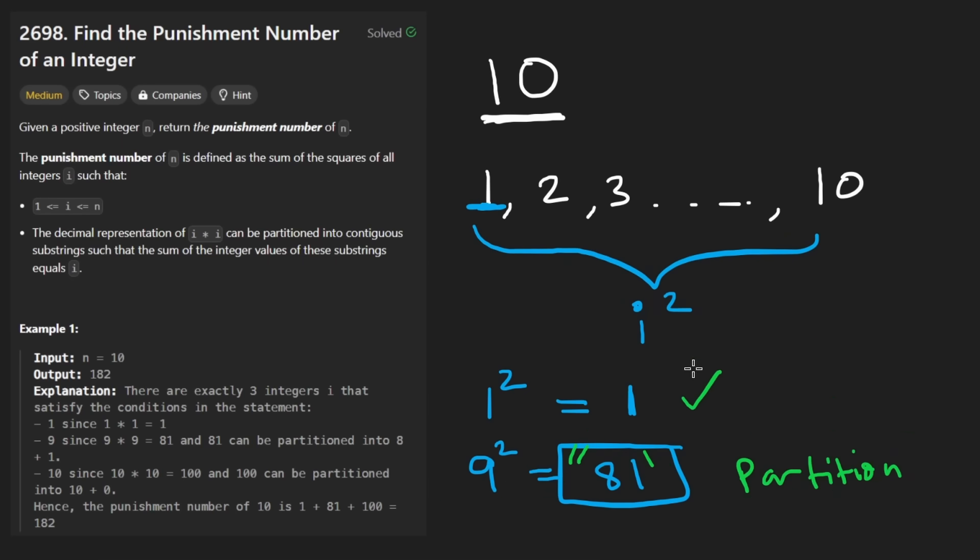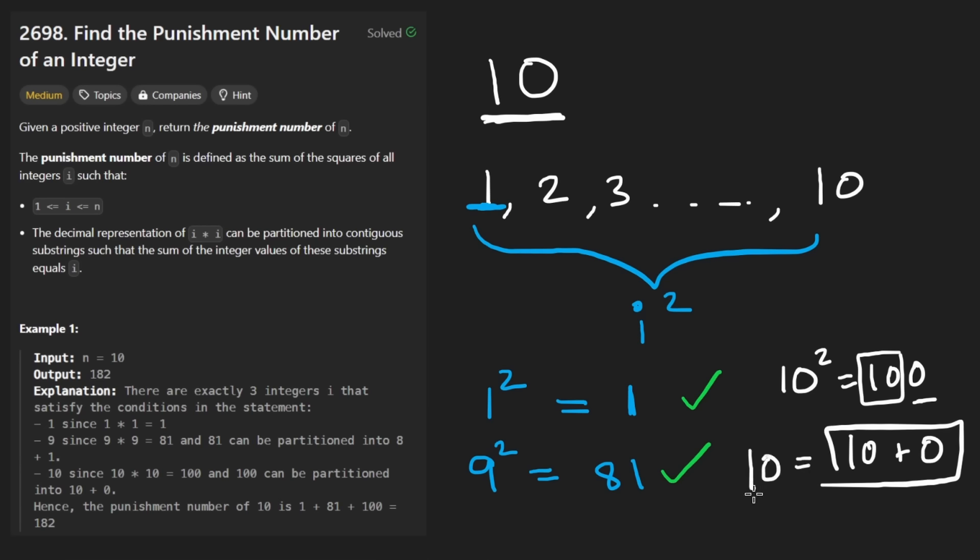So this will also get a checkmark from us. Very quickly, 10 will also get a checkmark. We square it. We get 100. And we can split this where we take this, which is 10. It's not 100 because we are not including the last digit. It's just 10. And then we take this as well, which is just 0. Add those together. You get 10. 10 is what we started with. So this one also gets a checkmark. And these are the only three numbers from 1 through 10 that are going to get checkmarks from us.